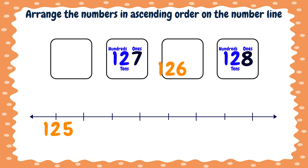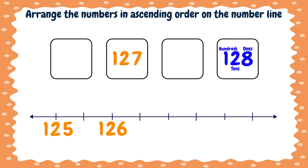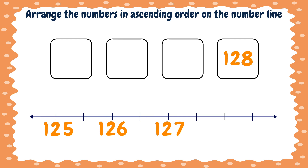So we will put it here. We have two numbers left. Here is a number seven and here is a number eight. Which one is the smallest? The number seven. Well done. So the number one hundred twenty-seven is the smallest, we will put it here. As for the number one hundred twenty-eight, it is the largest, so we will put it here.